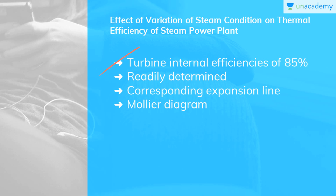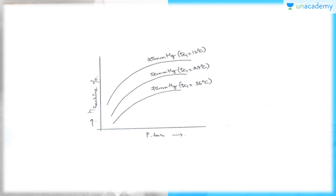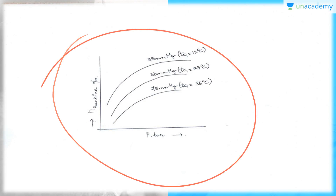The turbine internal efficiencies can be 85% and the quality of turbine exhaust will be 88%. For other values of ηT, T1 and X2, the pressure limits can be readily determined by drawing the corresponding expansion line in a Mollier diagram. You can see here the effect of inlet steam pressure and condenser pressure, showing Rankine efficiency versus pressure.